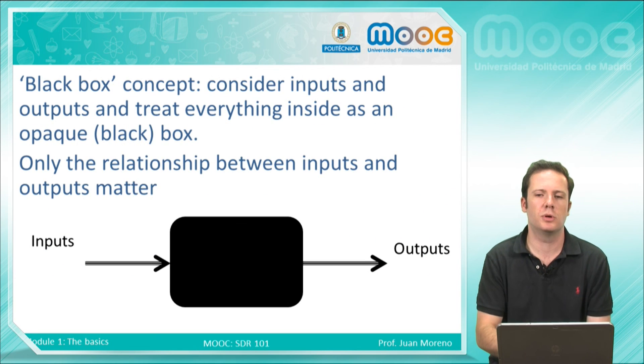This is a very important concept here - it's the black box concept. This means that you consider a system or a component as only the relationship between the outputs and the inputs, so it does not matter what happens inside that box. You don't need to know the details about that box; you only need to know the output that goes from a certain input.